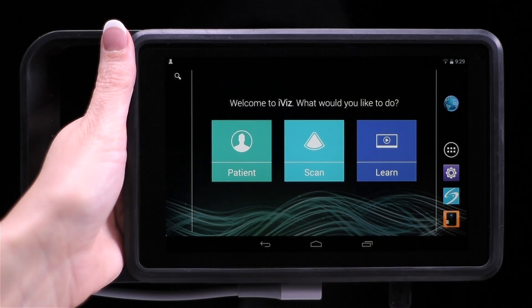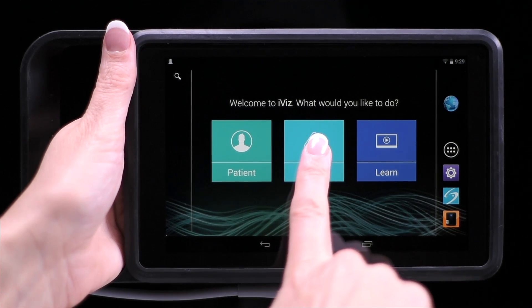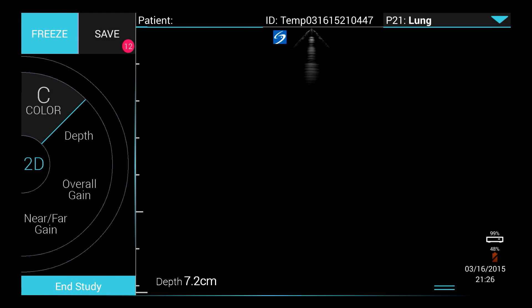To start scanning, just tap Scan. Spin the wheel to select the scanning option you want.